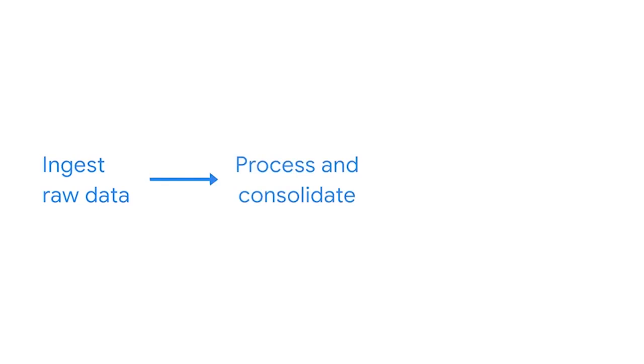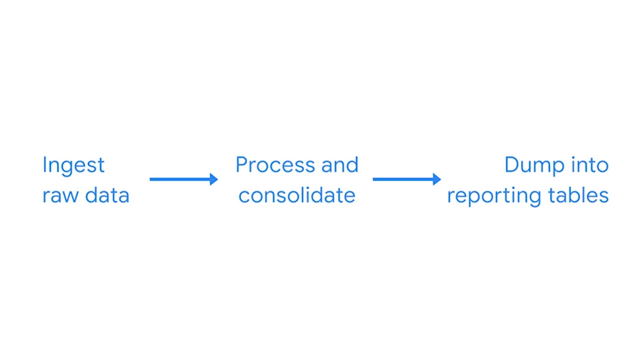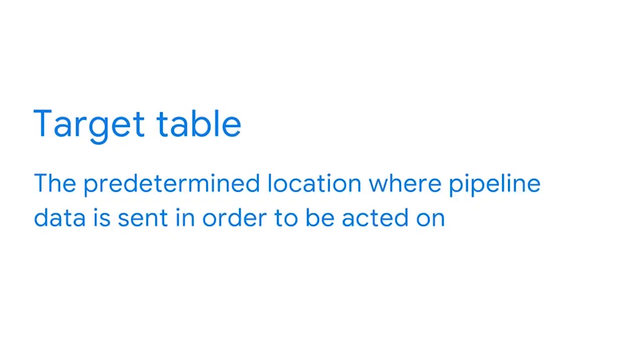We can think of a data pipeline functioning in three stages: ingesting the raw data, processing and consolidating it into categories, and dumping the data into reporting tables that users can access. These reporting tables are referred to as target tables — predetermined locations where pipeline data is sent in order to be acted on. Processing and transforming data while it is being moved is important because it ensures the data is ready to be used when it arrives.